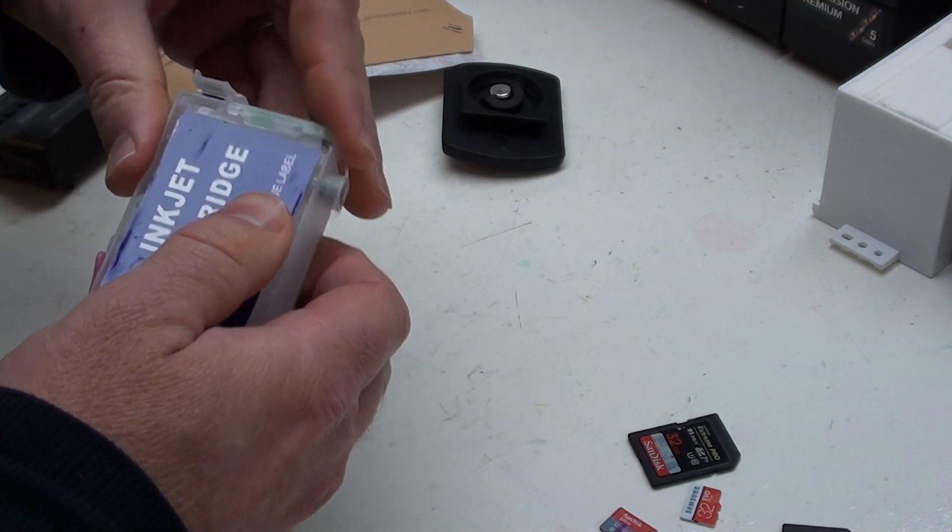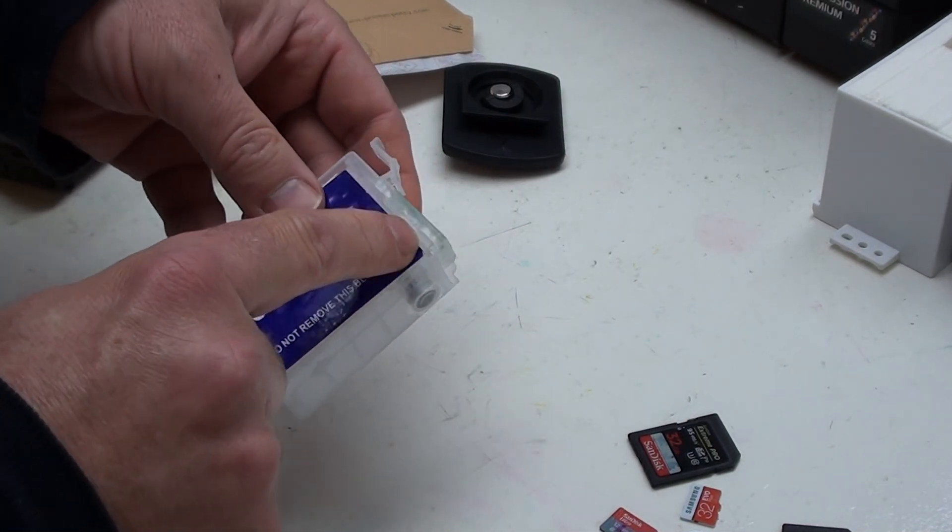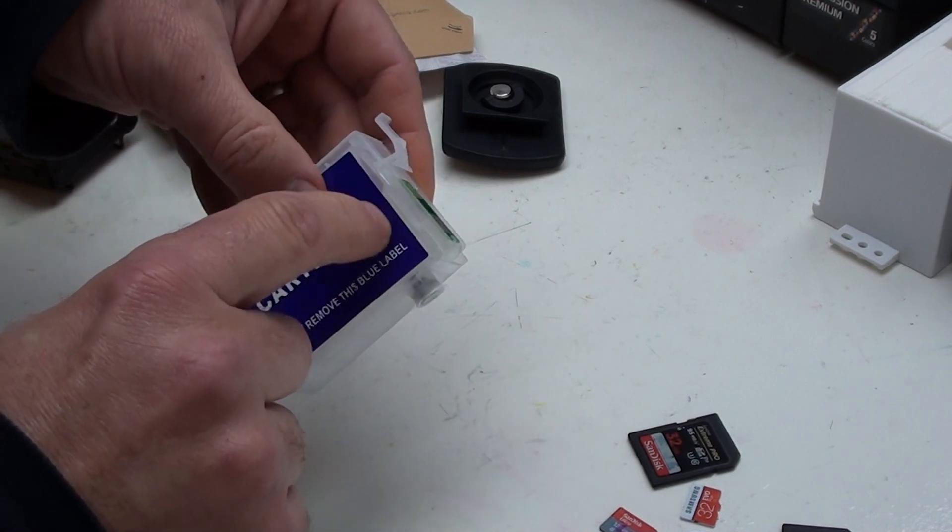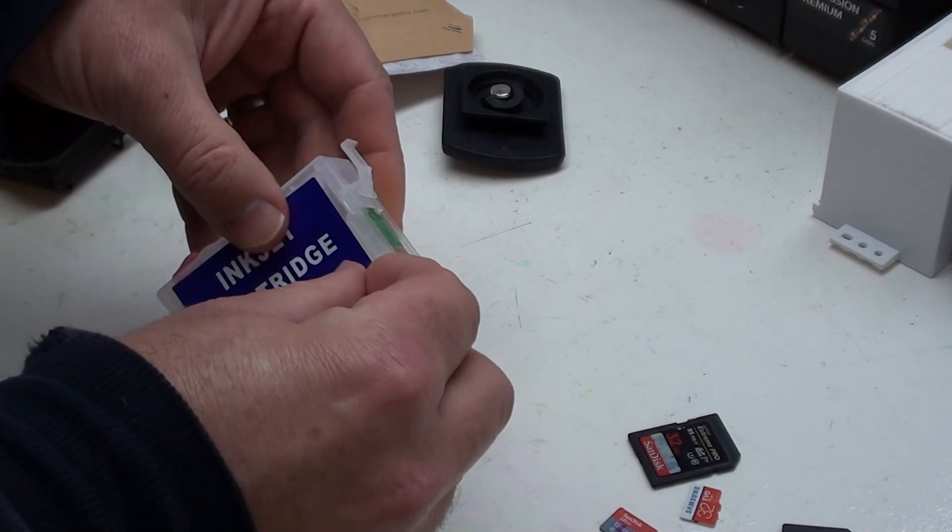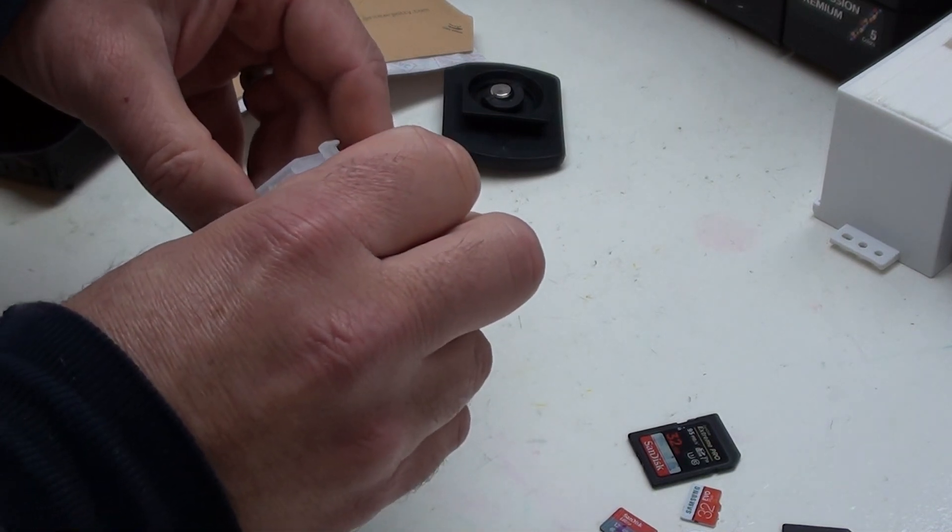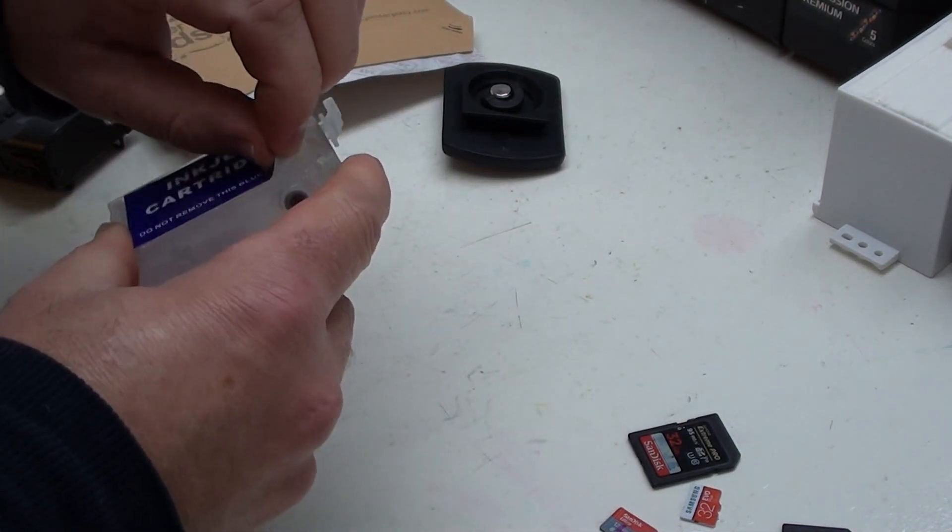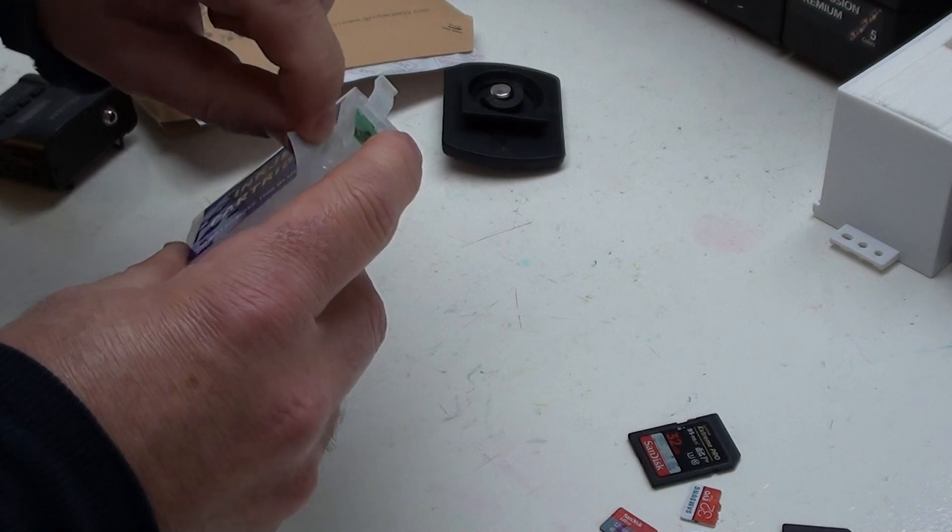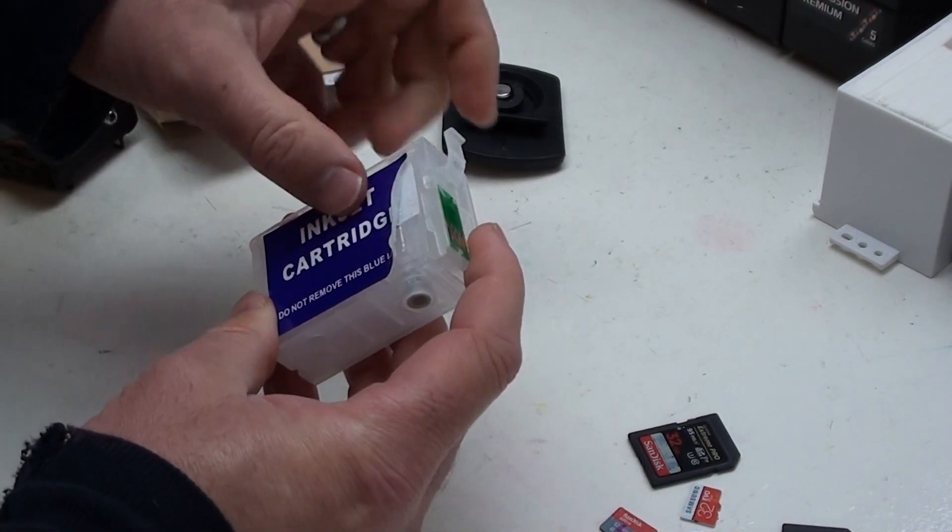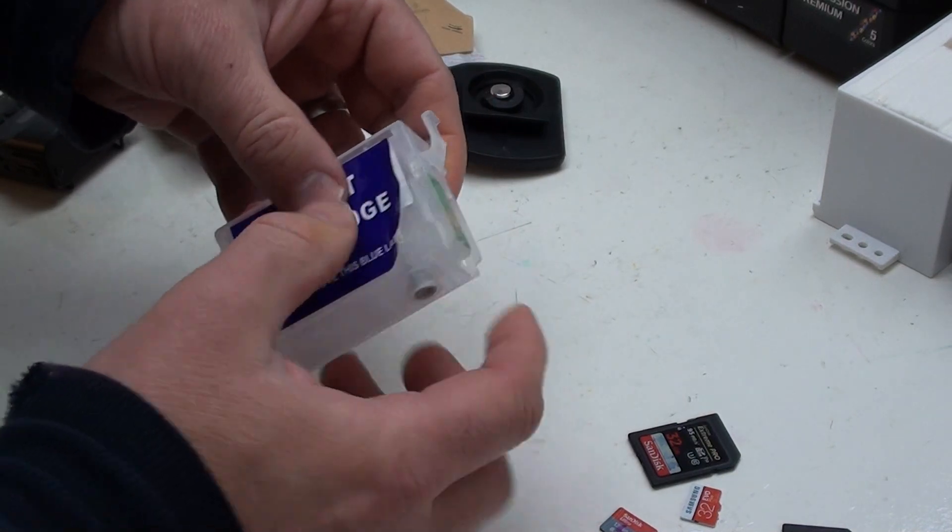One thing to watch out for: sometimes these labels are put on in a way that goes over this little lip and holds the chip holder down. You may need to gently peel the edge of that label back. Where it says 'do not remove this label,' what it means is don't show our secrets behind here. You'll be fine so long as you don't pierce this film, so don't use a screwdriver or anything like that on this area.